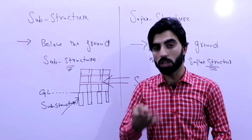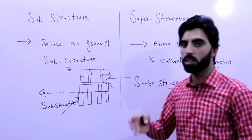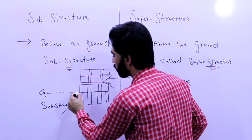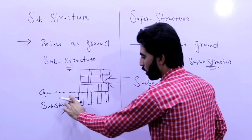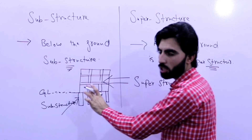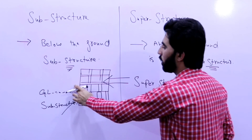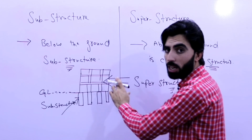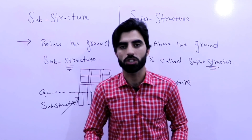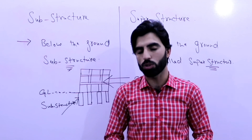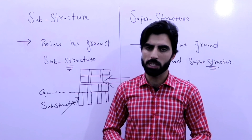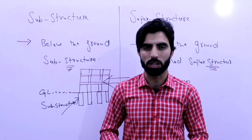You can see the ground level indicated here. Below the ground level, the part of the building is called substructure, and above the ground level the part of the building is called superstructure. This is a short video to discuss substructure and superstructure. If you have any questions, comment below and I will try to reply. Thanks for watching, see you in the next video!